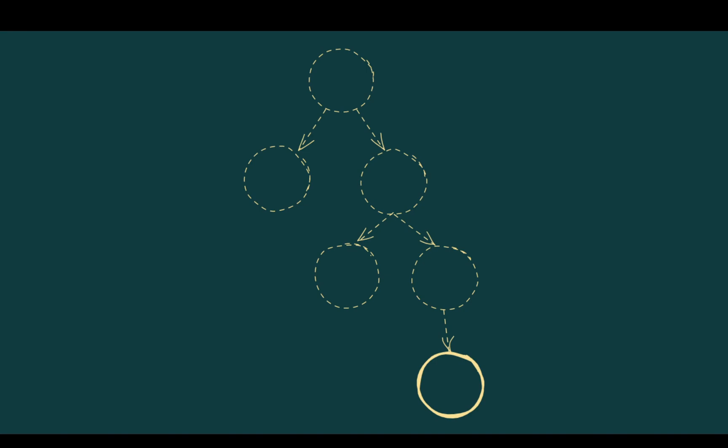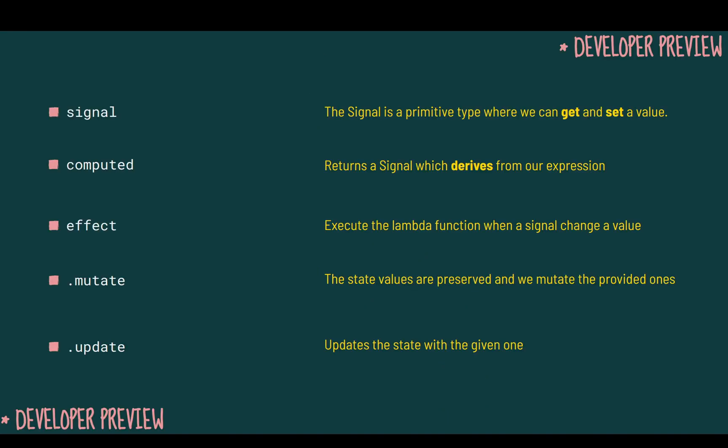So what is the change with signals? Signals will offer a more fine-grained change detection, which means that updates will happen only on the part of the component that should be updated. This will be a great improvement in terms of performance. As I said at the beginning, the current API is just a developer preview, but let's see what we currently have.